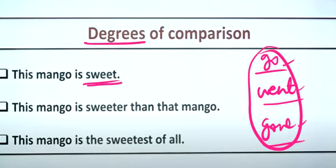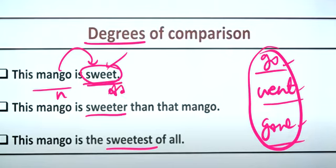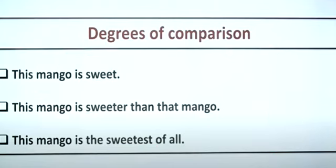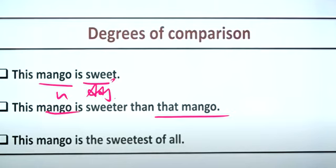Adjective degrees work similarly: 'sweet,' 'sweeter,' 'sweetest.' In the positive degree, you just modify the noun — no comparison. 'Sweet' is the adjective, and 'mango' is the noun. When you compare it to something else, you use the comparative degree. The highest level is the superlative degree.